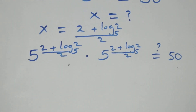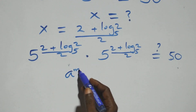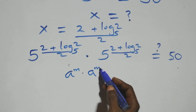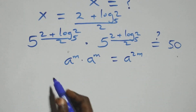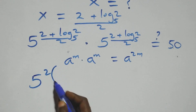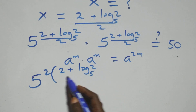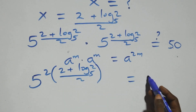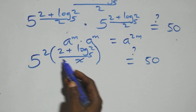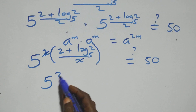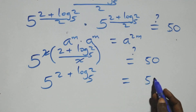When we have a raised to power m times a raised to the same power m, this is the same as a raised to power m plus m, that is 2m. So this becomes 5 raised to power 2 times (2 plus log₅2)/2. The 2 in the numerator and denominator cancel, leaving 5 raised to power 2 plus log₅2.